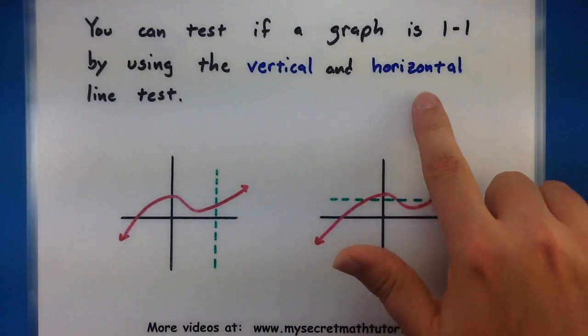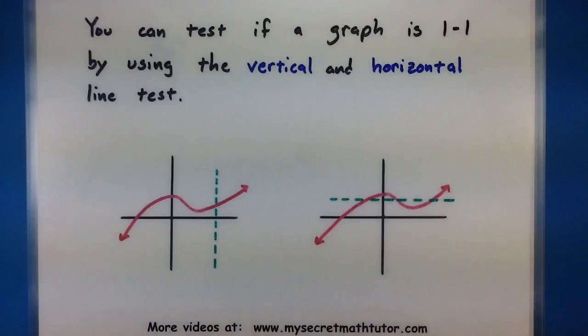When you use the horizontal line test now you're checking those outputs to see if there's two inputs that go to the same spot. And the key with using either of these tests is that you either imagine a vertical or horizontal line, and you want to check to make sure that it does not cross in more than one spot.